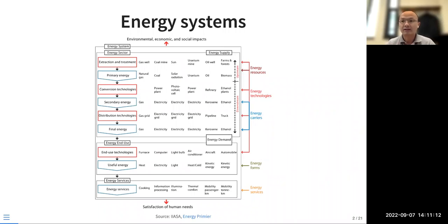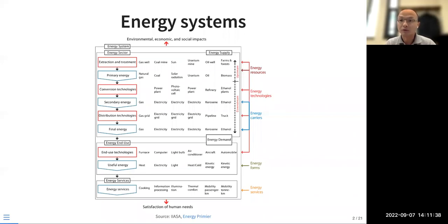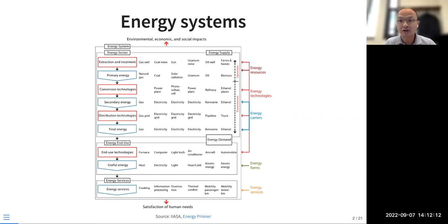In the end, it's the energy services that we enjoy — keeping our home warm or cool, cooking, washing, mobility, and all the services that rely on electricity. Think about the energy system as a long value chain, also embedded in the economy, energy, and environment triangle. That way will help us to position the topics we cover in the class.